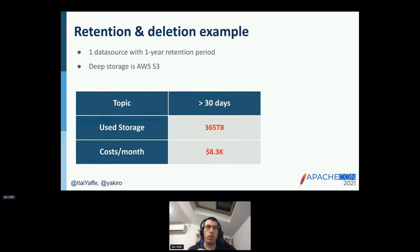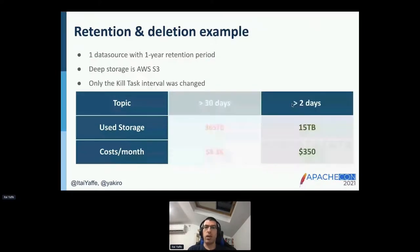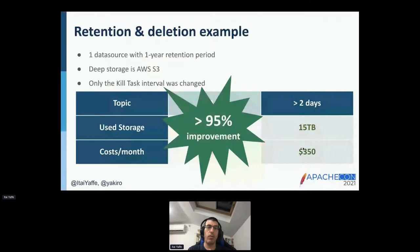Here's a real-world example. We had a data source with a one-year retention period using AWS S3 as deep storage. Initially, our kill task interval deleted only versions older than 30 days, which required over 350 terabytes in deep storage and cost over $8,000 per month. By simply changing the kill task interval to delete unused versions older than two days — still serving queries up to the last year — we reduced storage to only 15 terabytes and cost to only $350 per month. That's over 95% improvement for a single data source.